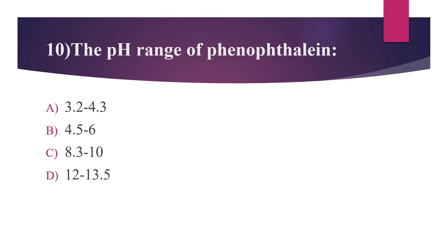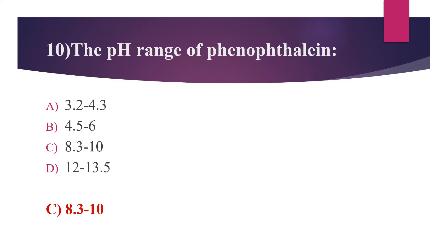Tenth question: the pH range of phenolphthalein. Option A: 3.2 to 4.3. Option B: 4.5 to 6. Option C: 8.3 to 10. Option D: 12 to 13.5. The answer is option C, 8.3 to 10. Phenolphthalein is an acid-base indicator.